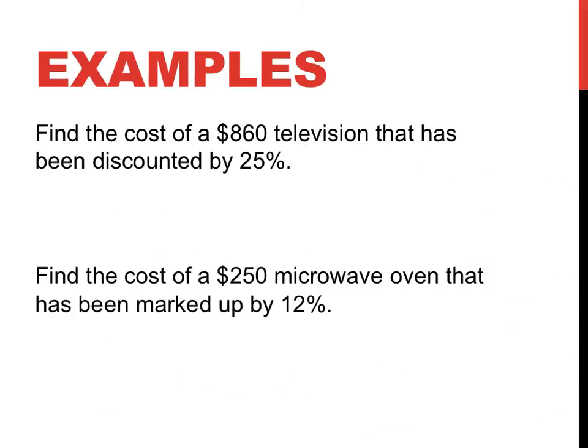Find the cost of an $860 television that's been discounted by 25%. We can do it a few ways, 25%. So I start off with $860. I'm going to get you to use mental strategies. 10%, that looks a bit funny, 10% is going to be equal to $86.